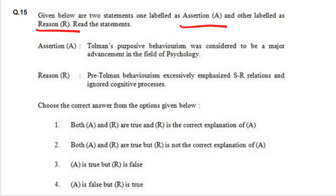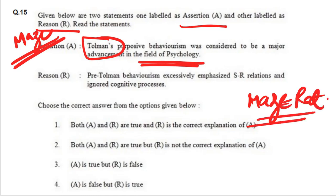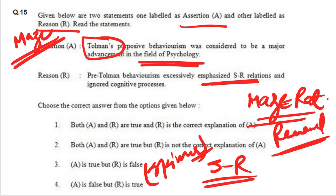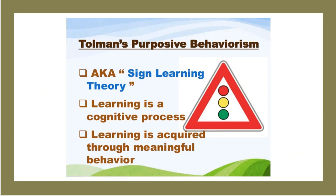Assertion: Tolman's purposive behaviorism was considered a major advancement in psychology — yes, Tolman's maze experiment with rats showed that when a reward is given, learning already done manifests itself, so the first statement is correct. Reason: pre-Tolman behaviorism excessively emphasized the S-R relation — yes, before Tolman we relied on S-R, during the time of Skinner. But then it became S-O-R. So both A and R are correct, and R explains A. This is Tolman's sign learning theory — learning is a cognitive process.